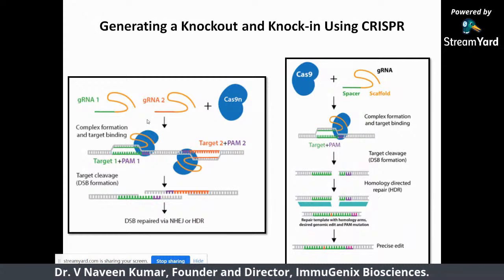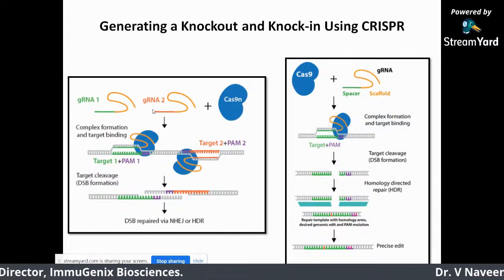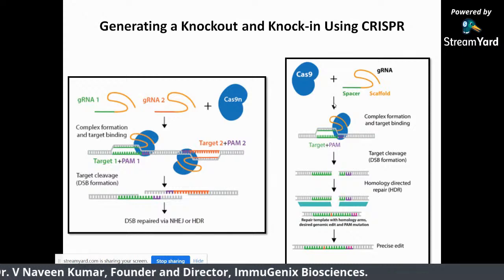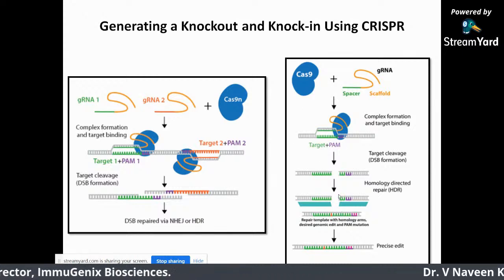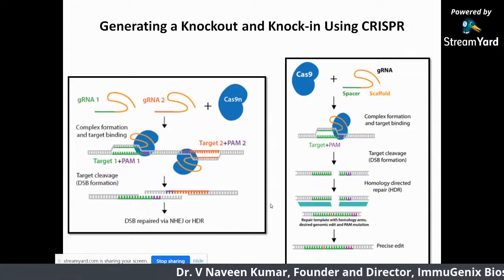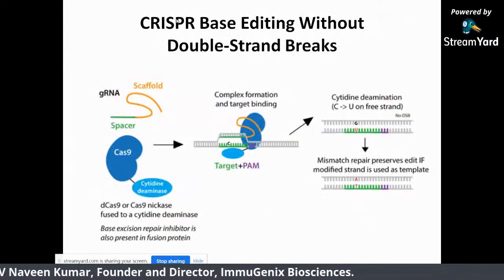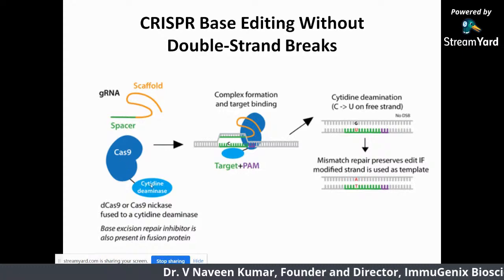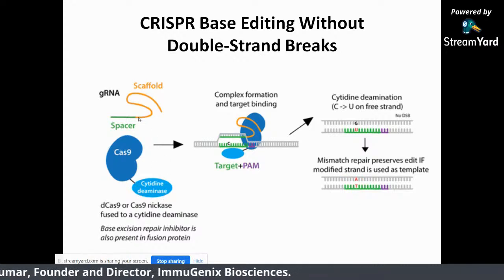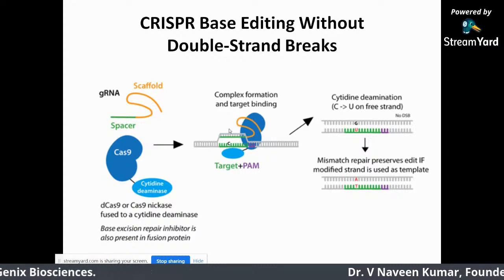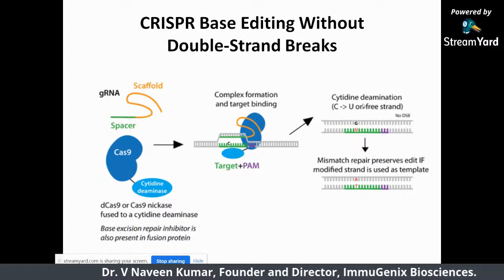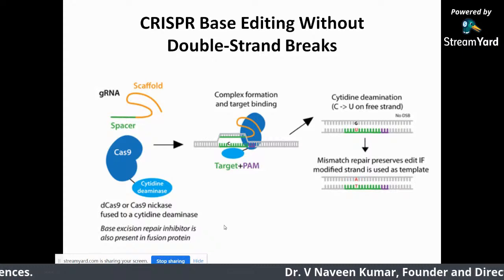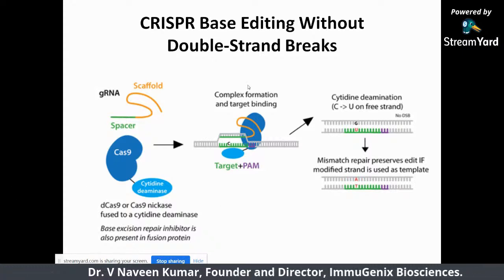CRISPR nickase — Cas9N — with two different adjacent loci can be targeted, forming a nick. In HDR, you put sequences with the correct nucleotide change, resulting in precise editing. You can also do CRISPR base editing without cutting — this is another advantage of a modified version of Cas9. Along with Cas9, a cytosine deaminase is incorporated. The spacer along with Cas9 goes and finds the target, the system is edited, and one single base pair can be changed. That is the advantage of Cas9 enzymes. By using this mechanism, people have edited bacteria, fungi, animals, human cells, and plant cells.